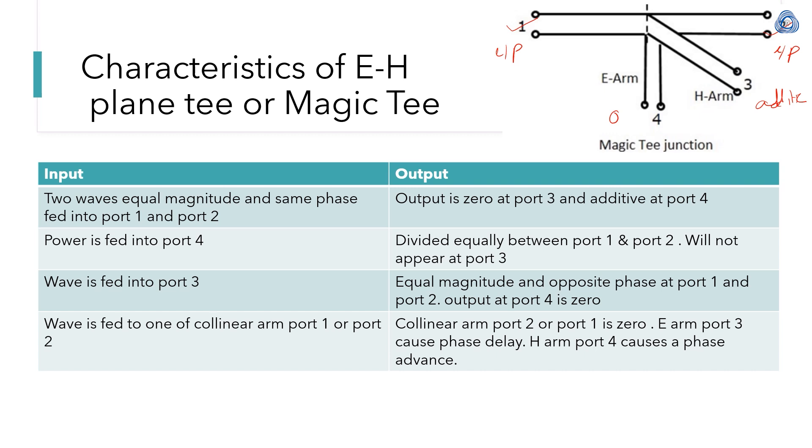Second case: power is given to port 4. Then output is equally divided for port 1 and port 2, and power will not appear at port 3. In the third case, if input is at port 4, then equal magnitude but opposite phase appears at port 1 and port 2, and output at port 3 is 0.